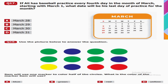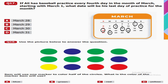Question number seventeen: Ali has baseball practice every fourth day in March starting on March 1st. What is his last practice day? Reading the table of four: 1st, 4th, 8th, 12th, 16th, 20th, 24th, 28th. The next would be 32nd, which does not exist, so March 28th is his last practice day.